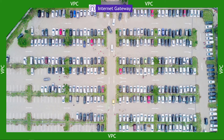Up at the top, we have traffic coming in from the outside world and traffic going out. In AWS networking terms, this would be an internet gateway — that's how your VPC talks to the internet.